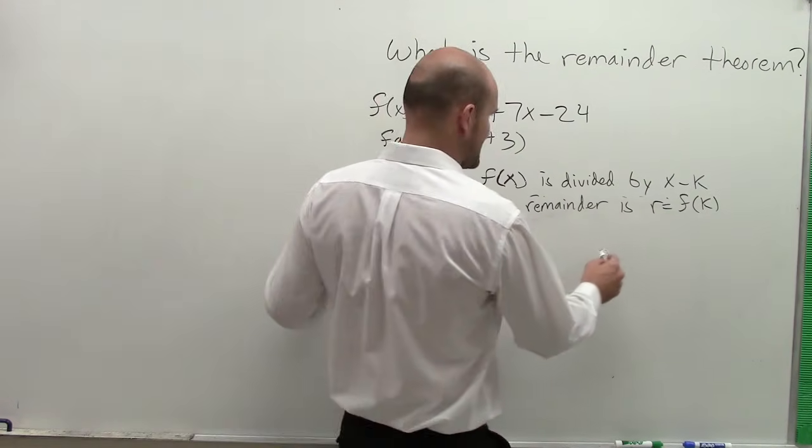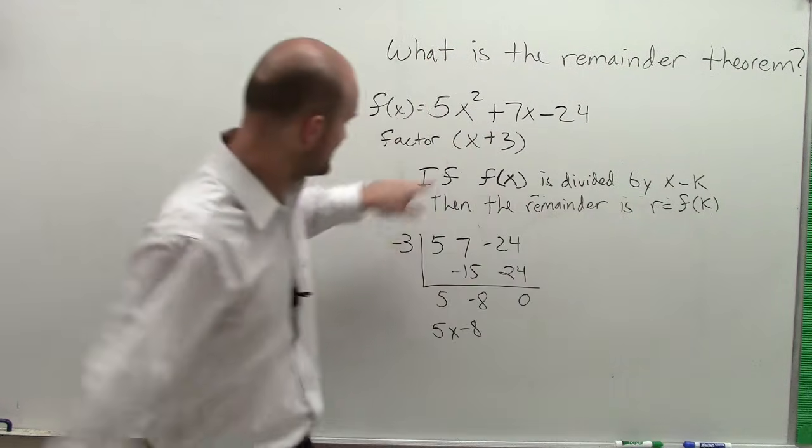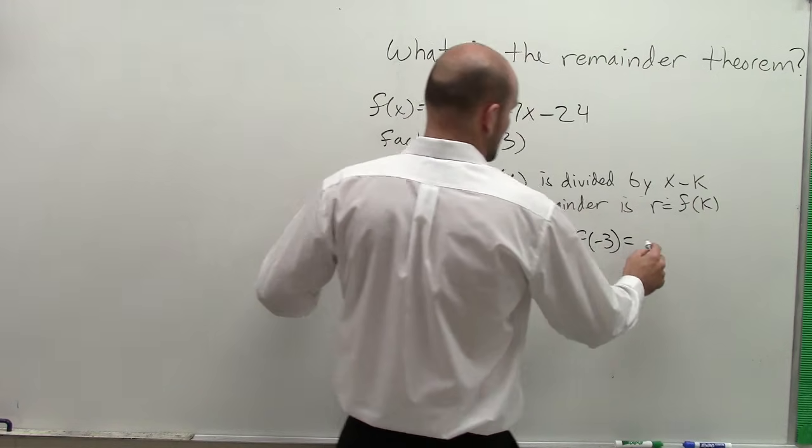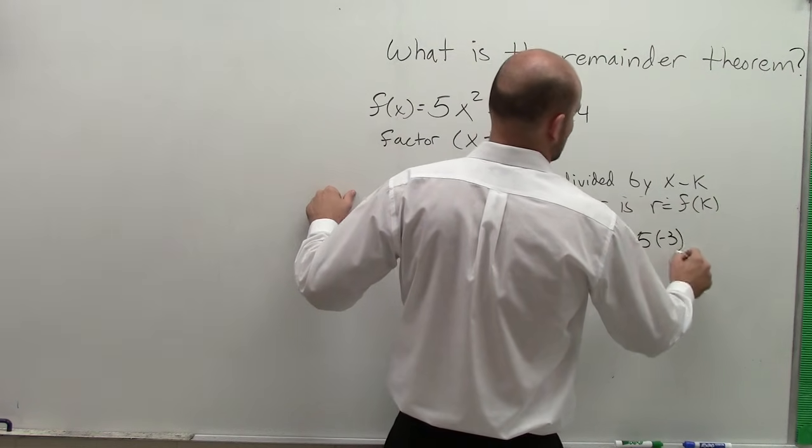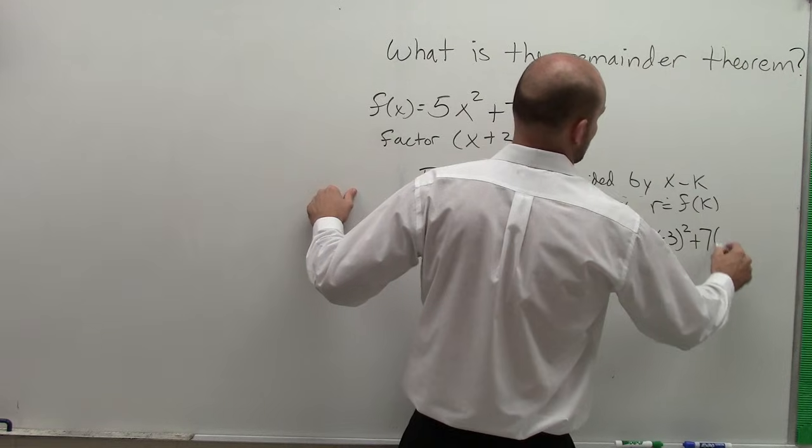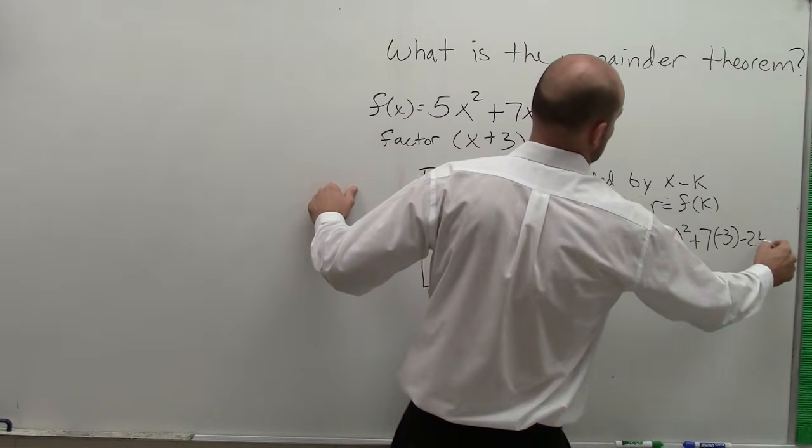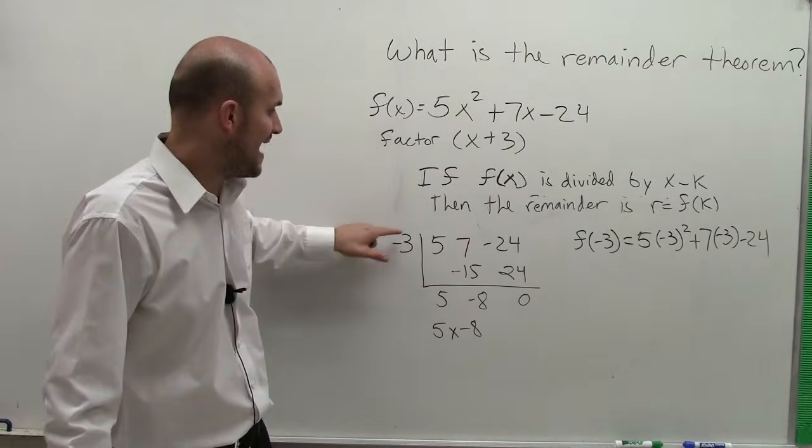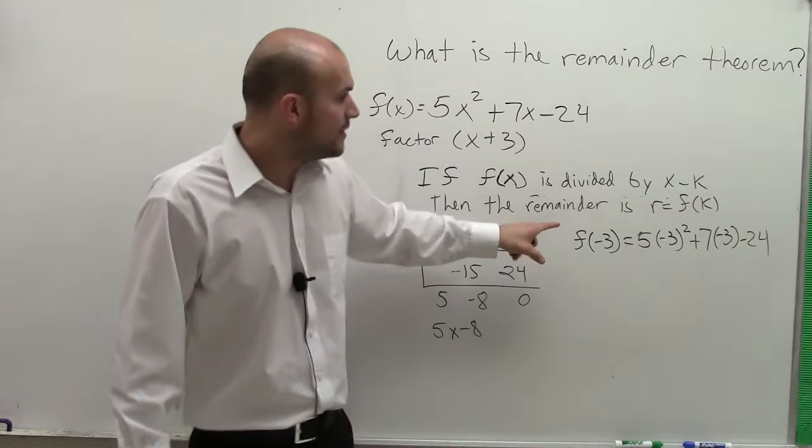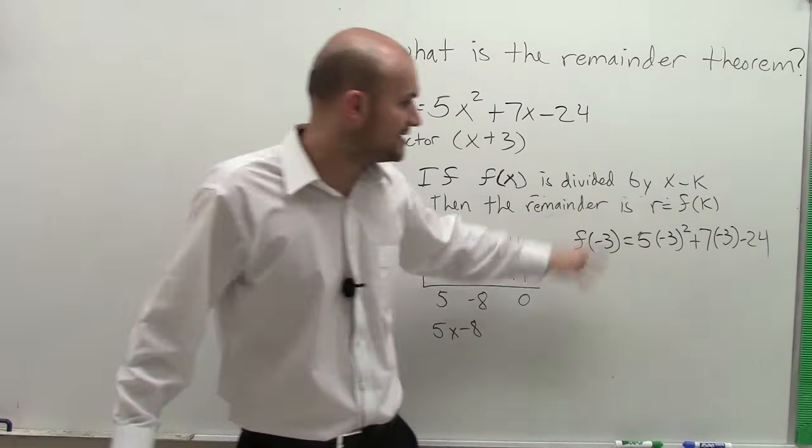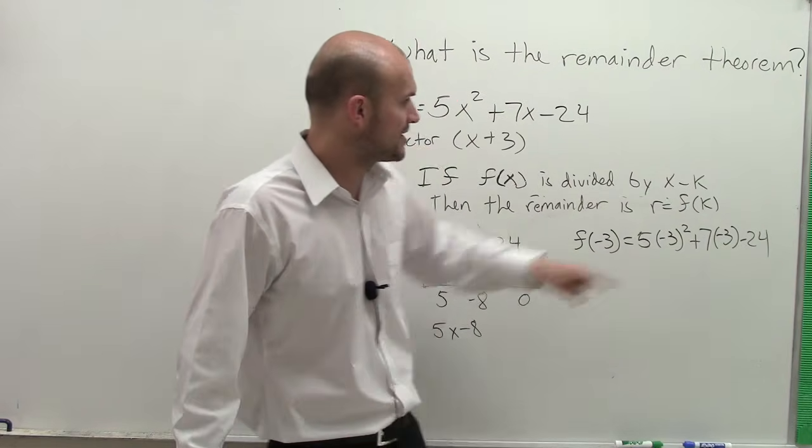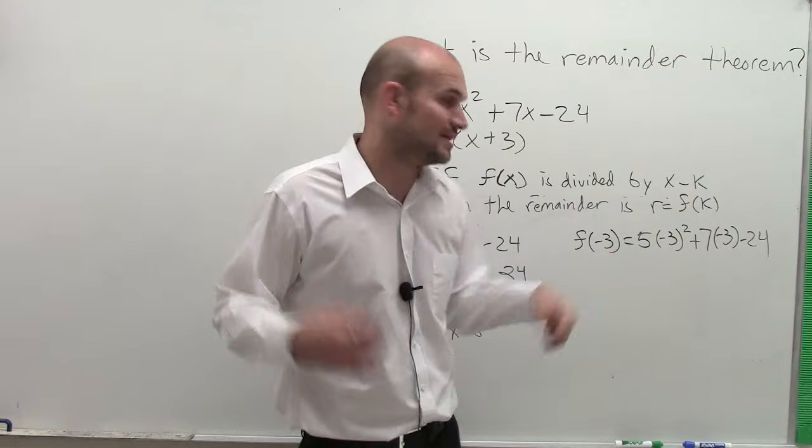So what I can do is I could say f(k). k in this case is negative 3. So I could say f(-3) is equal to 5 times (-3) squared plus 7 times (-3) minus 24. So the same thing, if you take your factor, divide it, and you get a remainder 0, if I evaluate for that same zero, guess what? By the remainder theorem, I'm also going to get 0. So let's take a look.